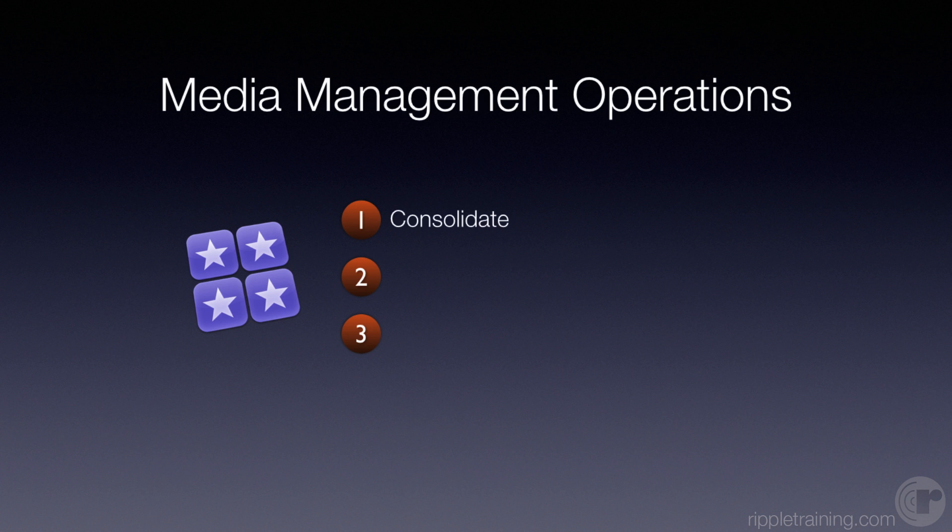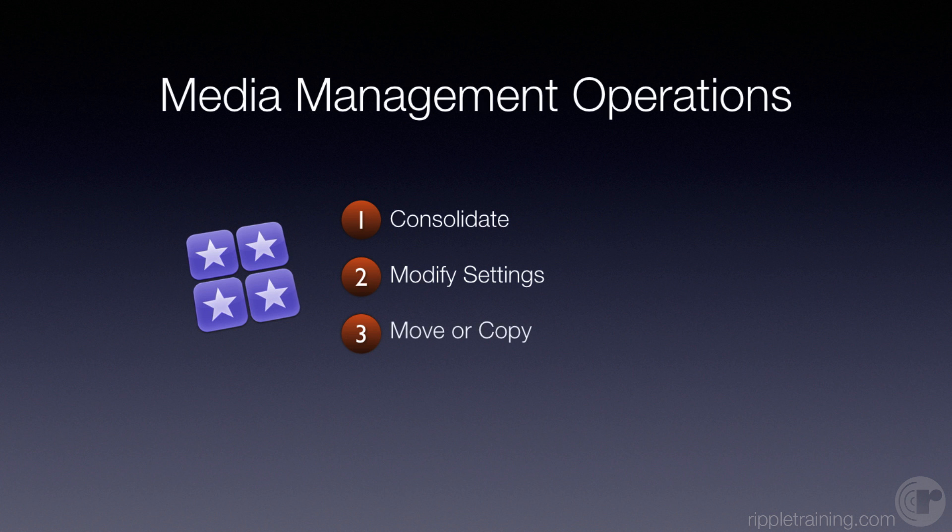The first operation is Consolidate — I like to refer to it as gathering your eggs in one basket. You might have media in the library managed and some media outside as external. Consolidate will bring that all together under one drive or one location. Then there's the Modify Settings button, which you use to retarget your media — saying you want it in or out. You modify settings before you consolidate. The last operation is Move or Copy — moving clips, events, projects, or entire libraries between locations.